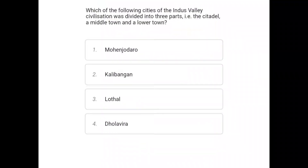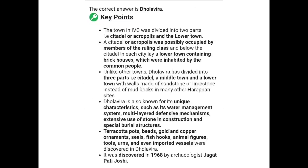The next question: which city of the Indus Valley Civilization was divided into three parts — the citadel, a middle town, and a lower town? The options are Mohenjo-daro, Kalibangan, Dhotha, and Dholavira. The correct answer is Dholavira. Most Indus Valley Civilization towns were divided into two parts: the citadel or acropolis for the ruling class, and the lower town containing brick houses inhabited by common people.